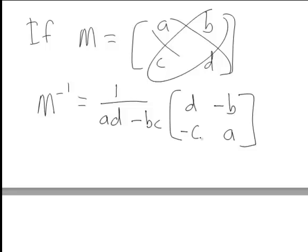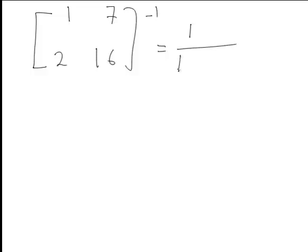And that is how we work out the inverse of matrix M. Applying this back to our example we wanted to find the inverse of this matrix. So that's going to be 1 divided by the determinant of this matrix which again is 1 times 16 minus 7 times 2.